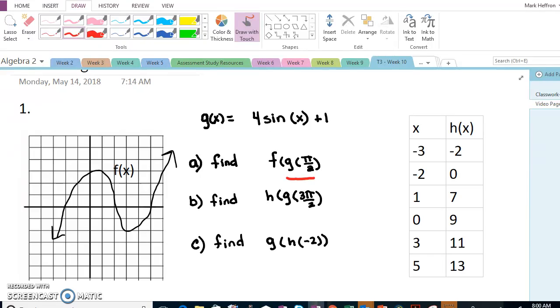g in this first problem is inside of f, so we want g of pi over 2. So we're going to plug pi over 2 in for x in the function g. Sine of pi over 2 is 1, and 1 times 4 is 4, plus 1 is 5.